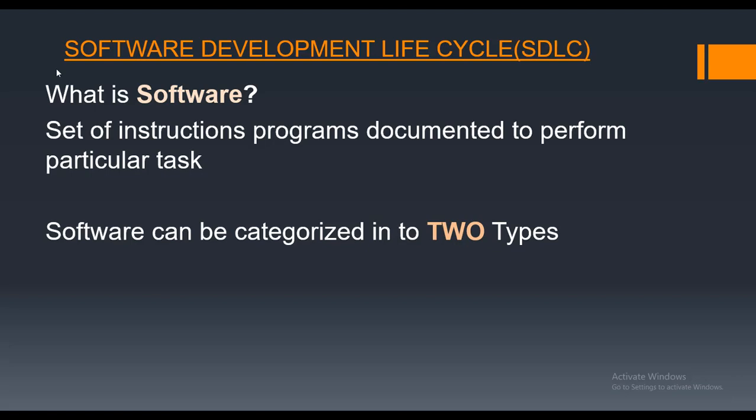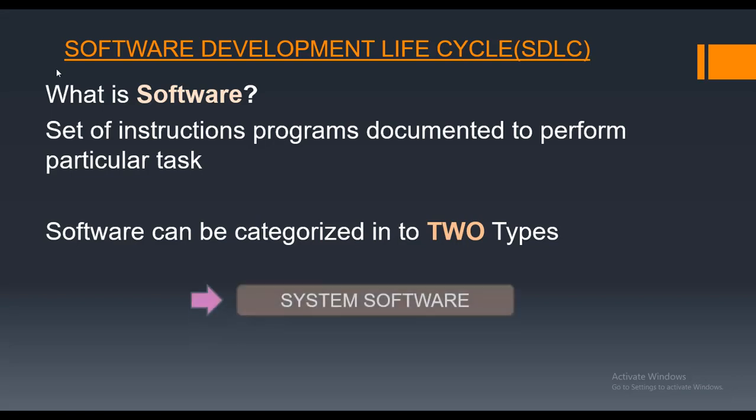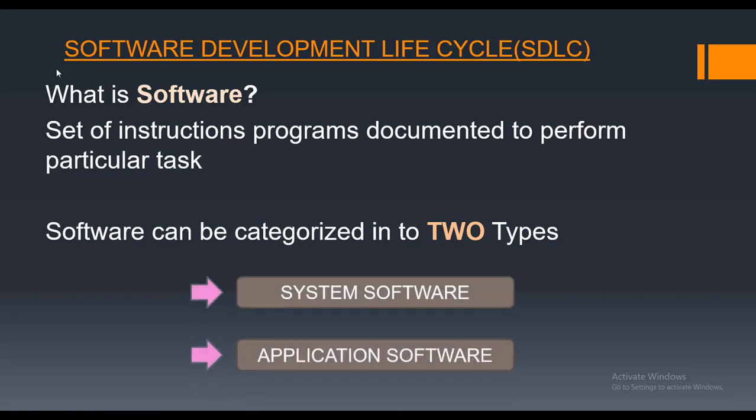Software, by general definition, is a set of instructions which are there to perform a particular task, or a set of programs to do a specific activity. Software is categorized into two types: system software and application software.